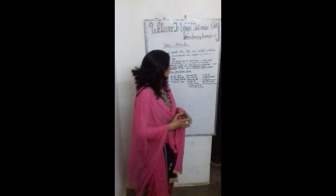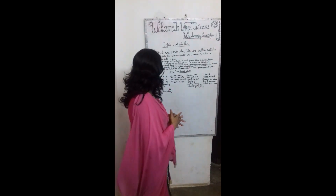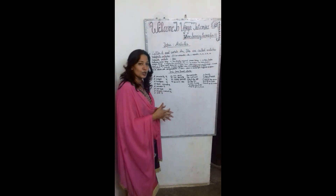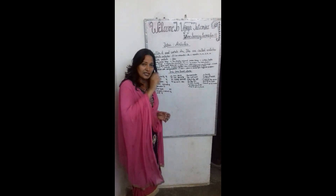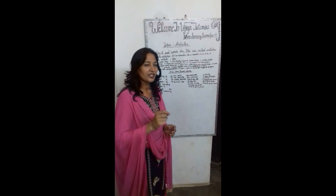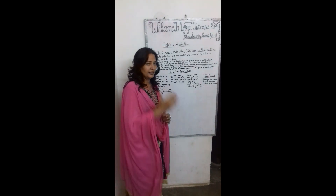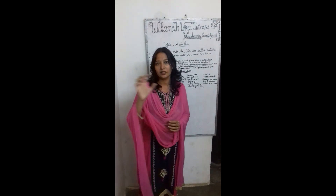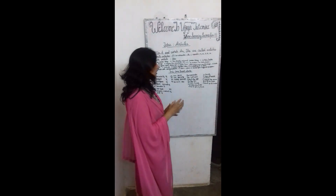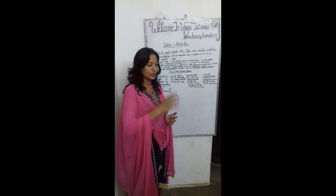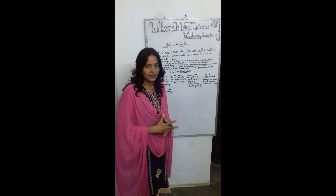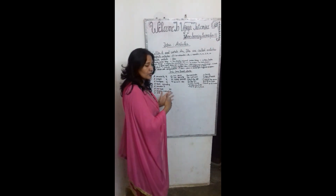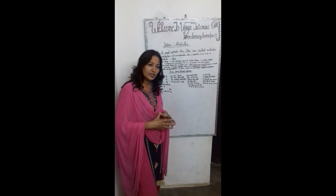It is actually the sound which we have to look at before using articles. Words like university, useful, European, and one-eyed start with a 'you' sound. So the sound is not of 'o' or a vowel — it is of 'you.' So we will use a. Similarly, words like one start with a 'w' sound, so students must not write an — we use a. Words like unicorn and unit also take a, because the sound is of 'you.' These are the words which appear to need an, but because the sound is 'you,' we use a.